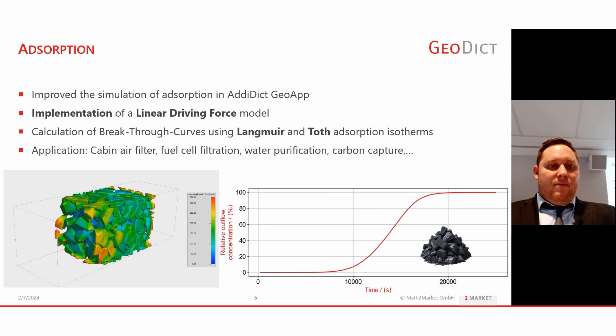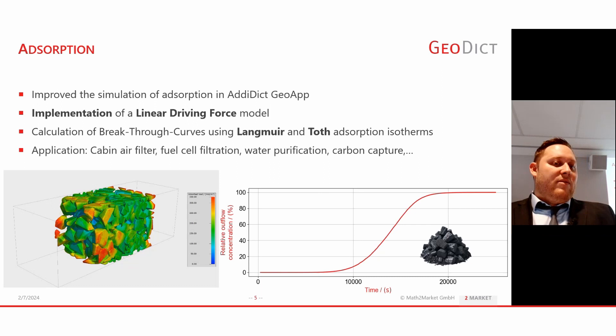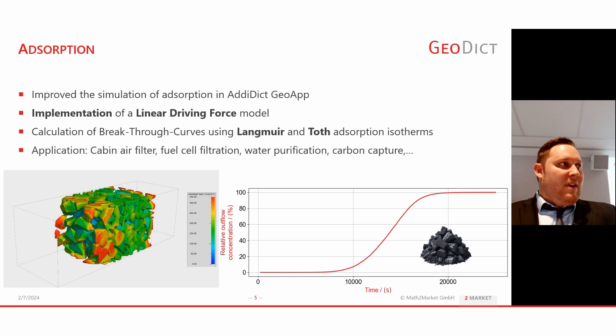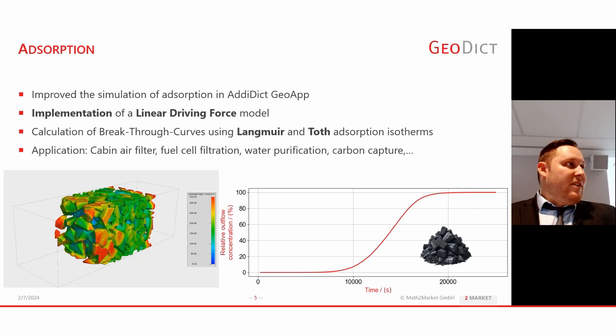The resulting curve is a so-called breakthrough curve. At the beginning, a lot of adsorbent can still be adsorbed as the concentration is nearly zero. Then it increases over time, and at the end we have a concentration at the outlet of 100%, meaning most of the adsorbent cannot be adsorbed anymore because all positions are blocked. This would be the time to replace the filter. Applications include cabin air filters, fuel cell filtration, and water purification — everywhere you can use activated carbon, zeolites, and so on.